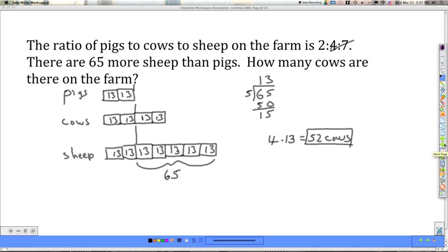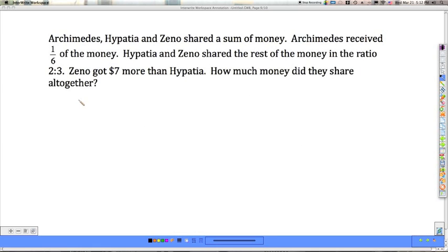Let's take a look at another problem. Archimedes, Hypatia, and Zeno shared a sum of money. Archimedes received 1/6 of the money. Hypatia and Zeno shared the rest of the money in the ratio of 2 to 3. Zeno got $7 more than Hypatia. How much money did they share altogether?